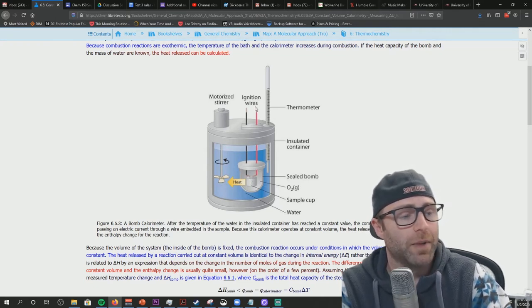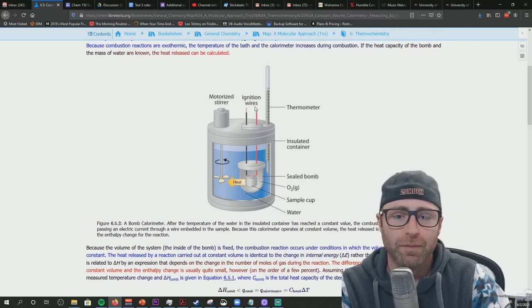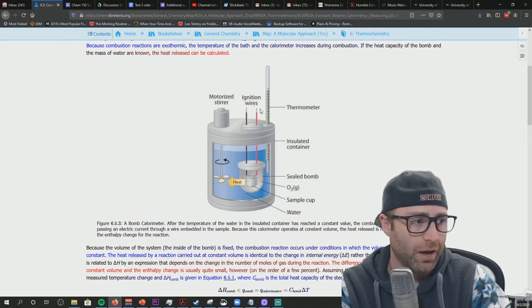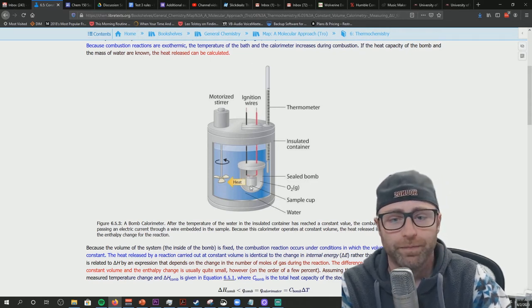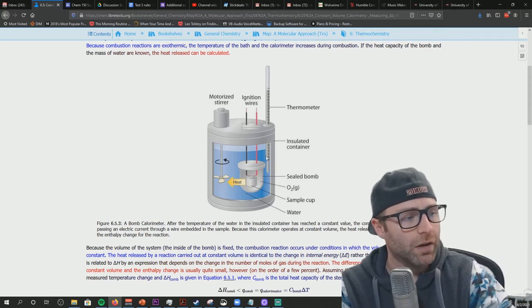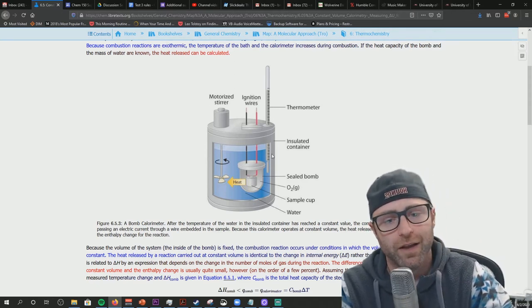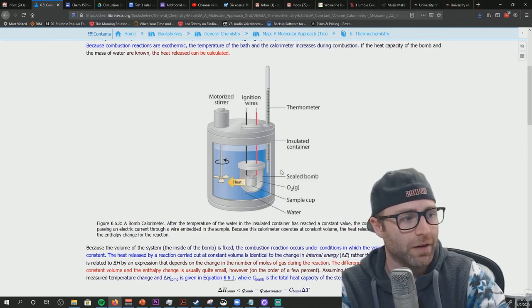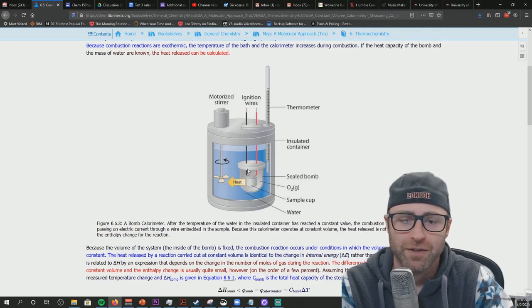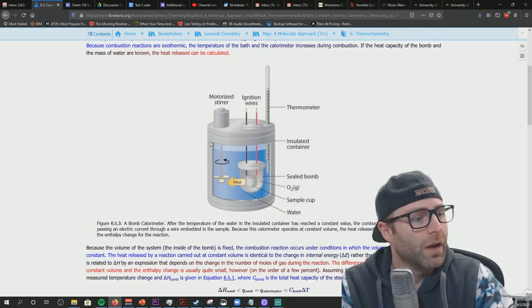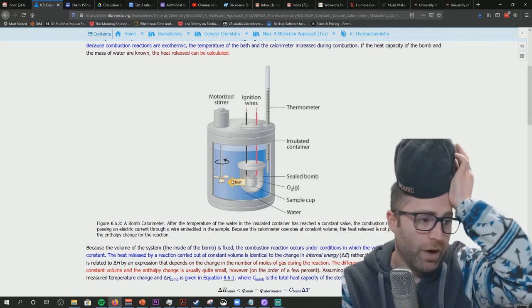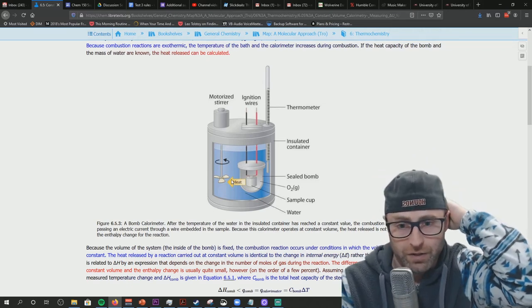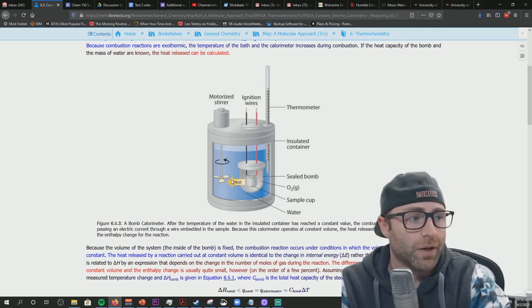The wires go out the top so that we can hook it up to a battery or something like that so that we can cause ignition. Around the bomb, we have water. The water is held in place by an insulated container. So that's what this metal insulated thing is. This window usually doesn't actually exist because you can't make an insulated window super well. So you've got this metal container that's holding a very known amount of water inside of it. You need this water mass to be known in order for your calculations to work.